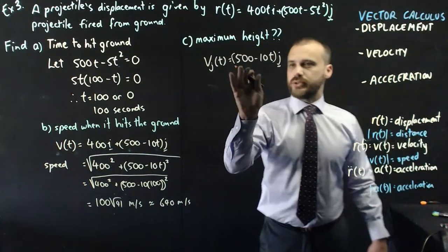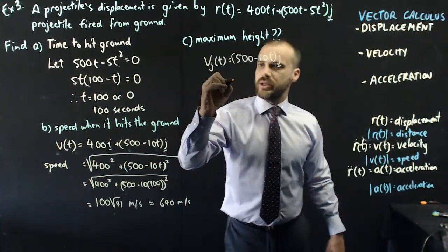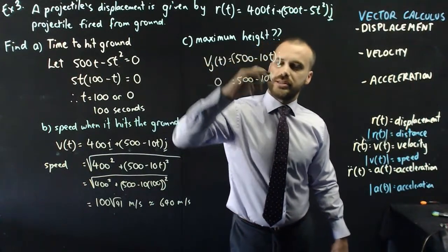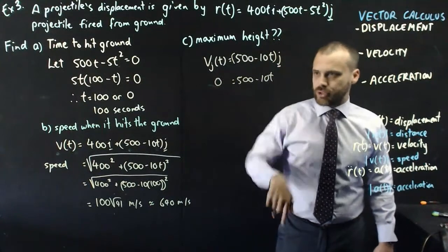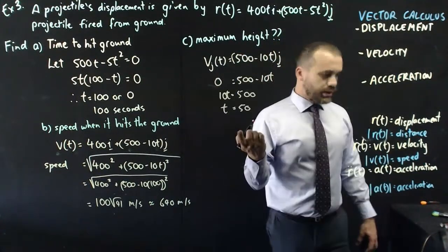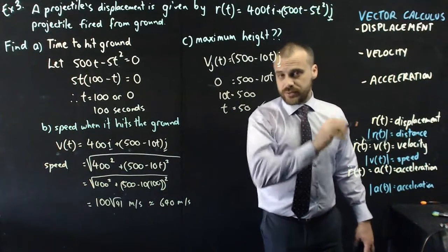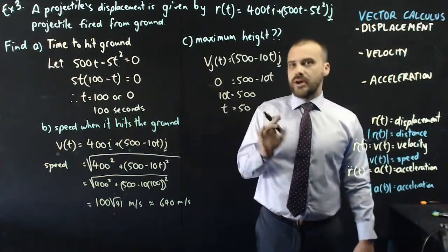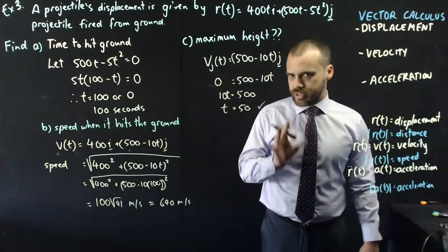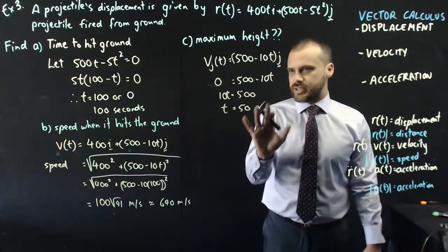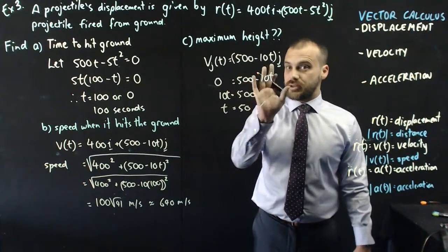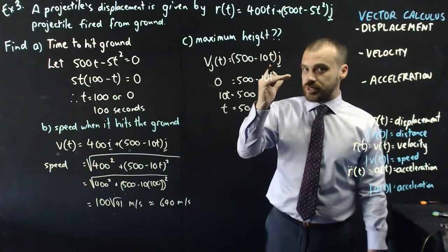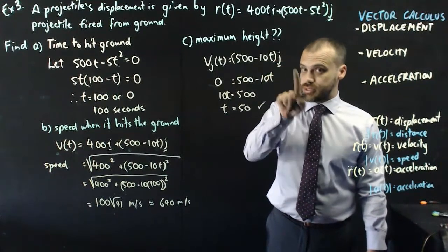Velocity in the j component equals 500 minus 10tj, so we can say that zero equals 500 minus 10t when it's at its peak. Not going up, not going down. And then we just solve that for t. Now, you probably could have guessed t equals 50 was going to be the answer because it took 100 seconds to hit the ground, but in more complicated scenarios, it's not going to be as clear-cut as that, so you still need to understand that at its peak, a projectile's velocity in the j component is zero. Important.